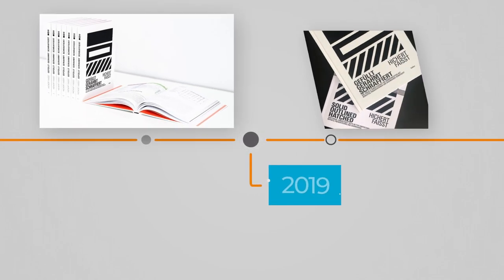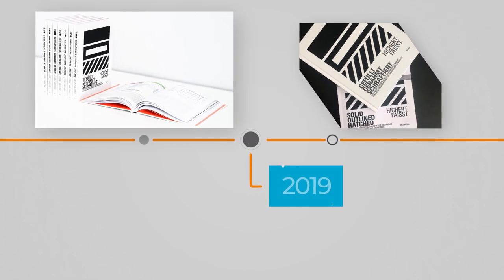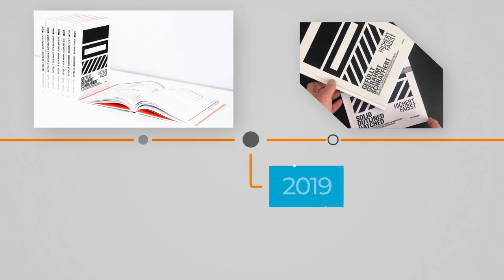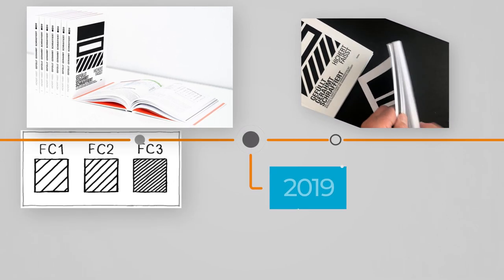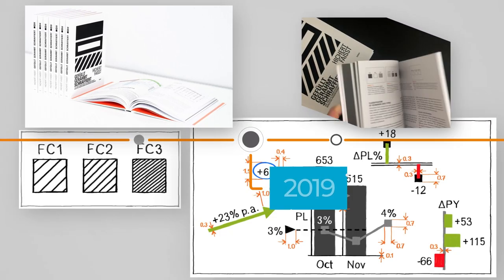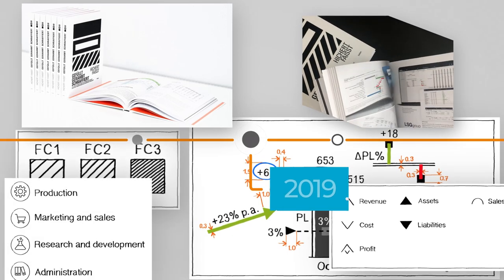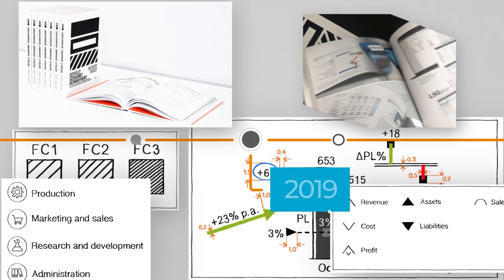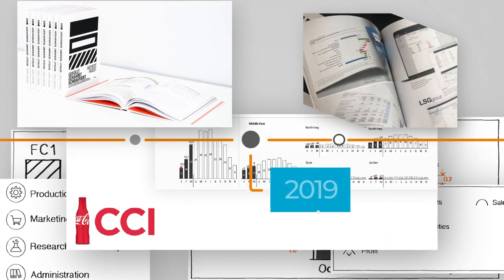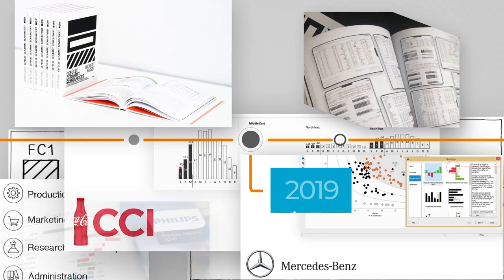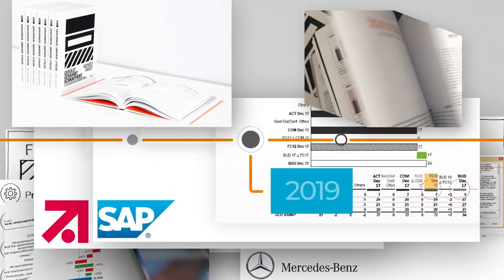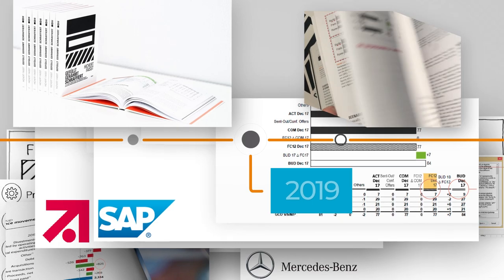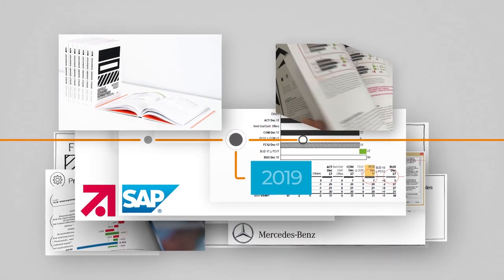In 2019, Jürgen and I published the German book Gefüllt Gram Schraffiert and later the English version Solid Outline Hatched, focused on the notation concept. It covers not only the present IBCS rules but also future ideas and applications in different companies, showing that IBCS works in practice.